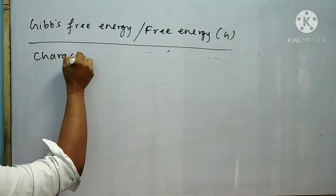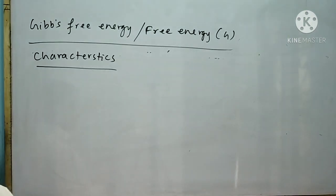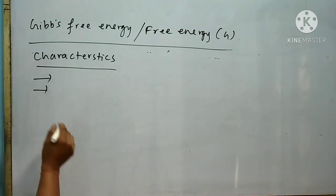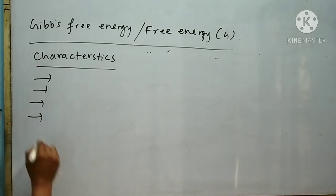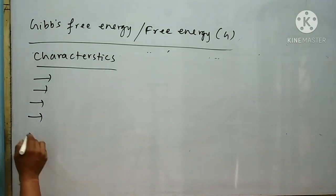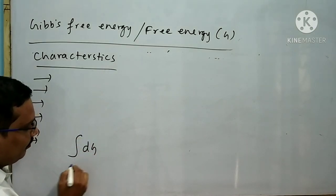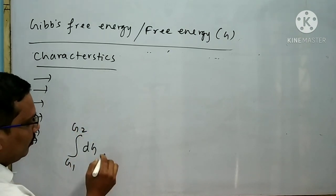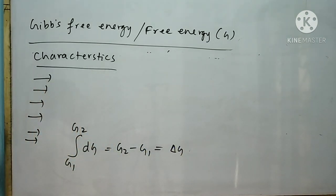The characteristics of Gibbs free energy are: first, it is an extensive property; second, it is a state function; third, its value is independent of the path followed; fourth, the absolute value of G cannot be calculated; fifth, the change in free energy can be calculated; and sixth, free energy has an exact differential, meaning ∫dG from G₁ to G₂ = G₂ − G₁ = ΔG.